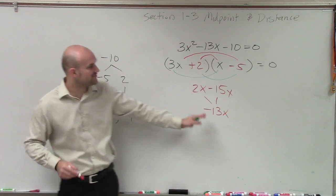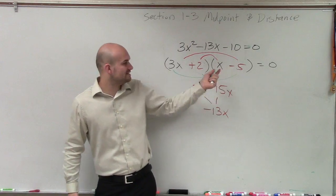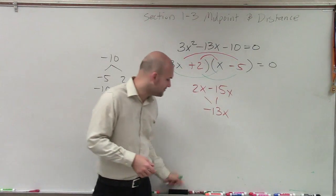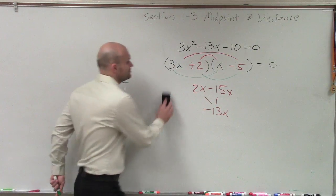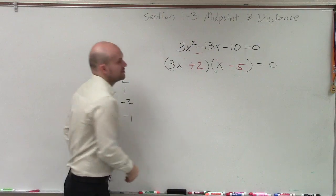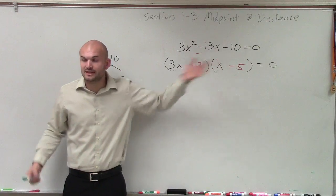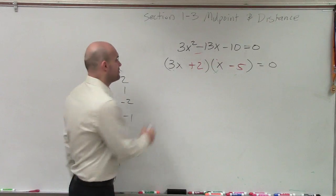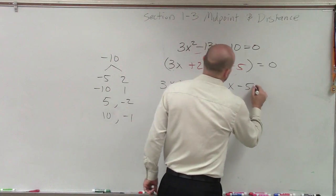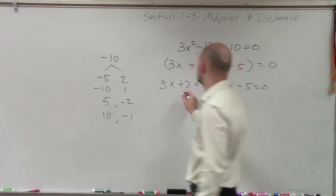So if I was to apply FOIL to these two binomials, these two factors would multiply to be my trinomial. So now, once I've determined them, now all I need to do is say, all right, I have a product of two factors equal to zero, so now I can apply the zero product property, stating that 3x plus 2 equals zero, and x minus 5 equals zero. Now, to solve the remainder, what I'll need to do is solve each equation.